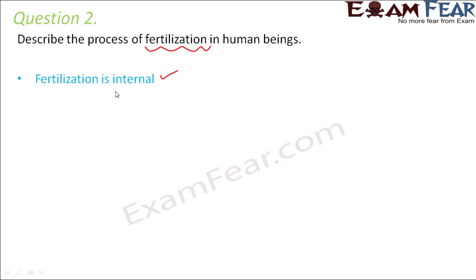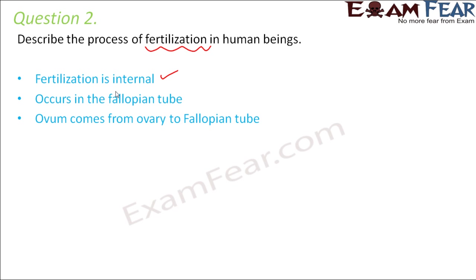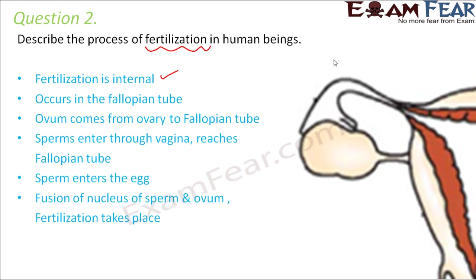Where exactly does fertilization happen? It happens in the fallopian tube. From the ovary, the egg gets released into the fallopian tube, so the ovum remains in the fallopian tube. The sperm enters through the vagina during sexual intercourse, then passes through the uterus and reaches the fallopian tube. The sperm and egg meet and fusion takes place in the fallopian tube, and as a result of this fertilization, a zygote is formed.